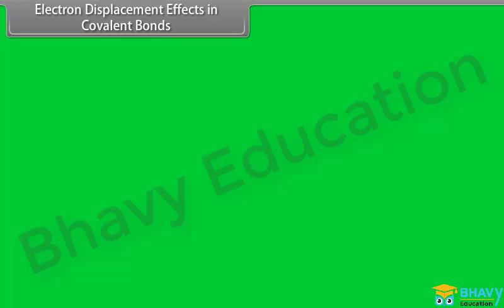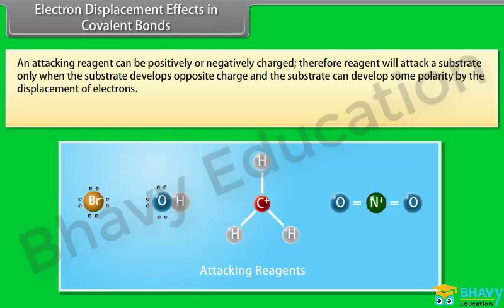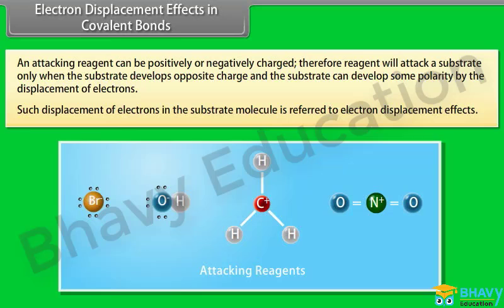An attacking reagent can be positively or negatively charged. A reagent will attack a substrate only when the substrate develops an opposite charge. The substrate can develop polarity by the displacement of electrons — such displacement of electrons in the substrate molecule is referred to as the electron displacement effect.